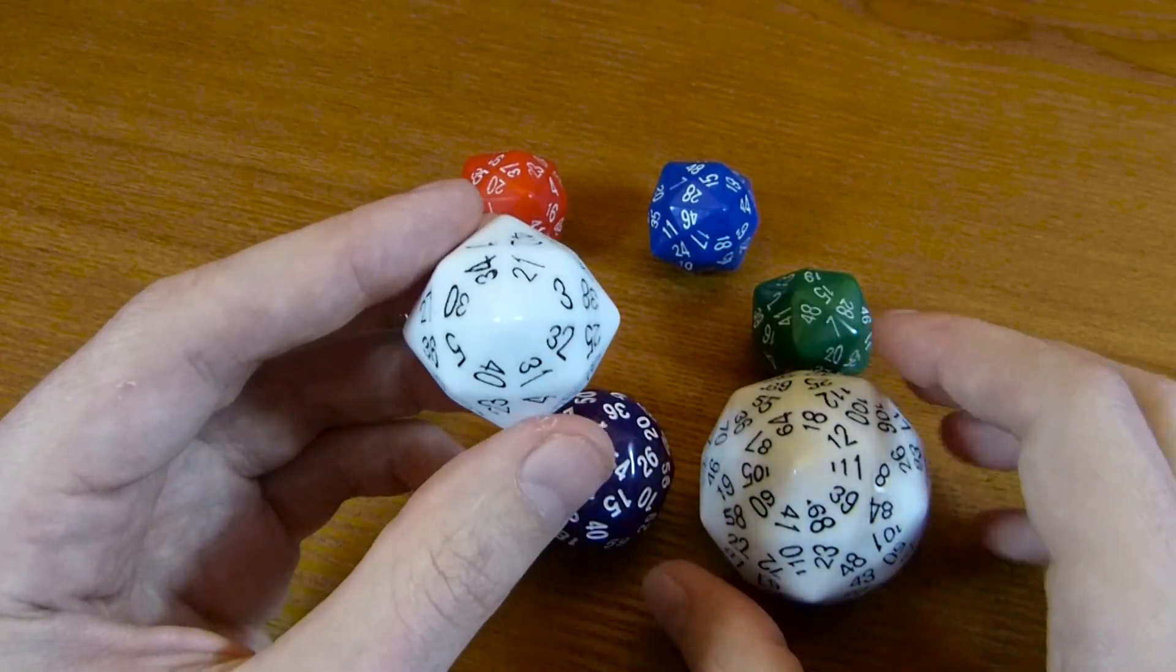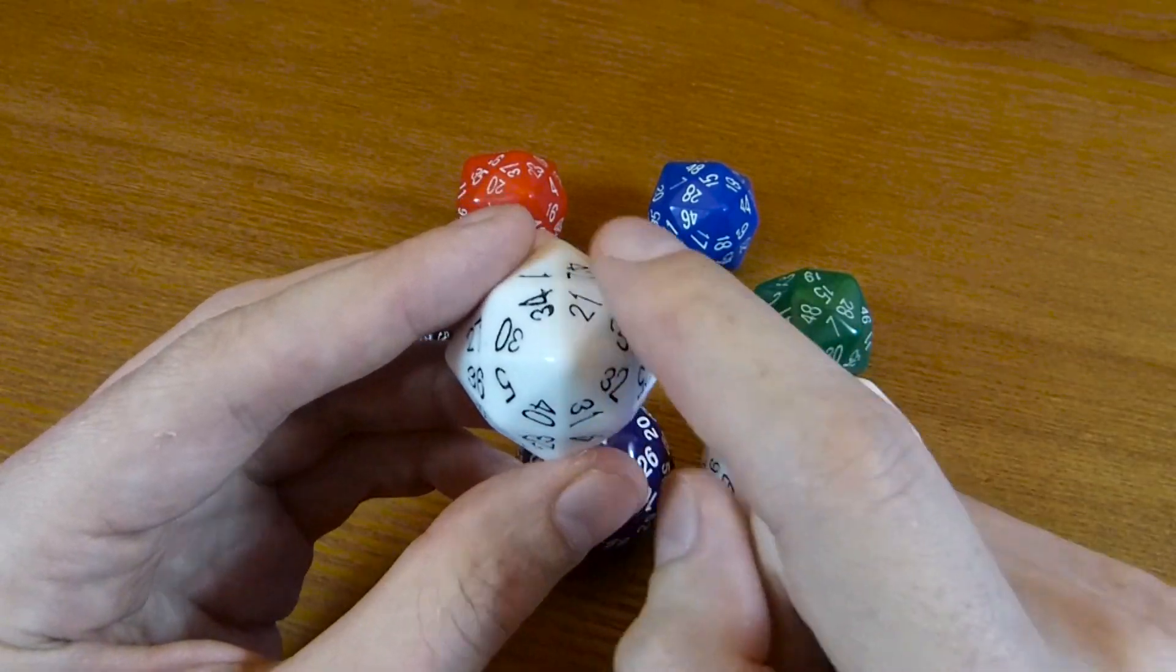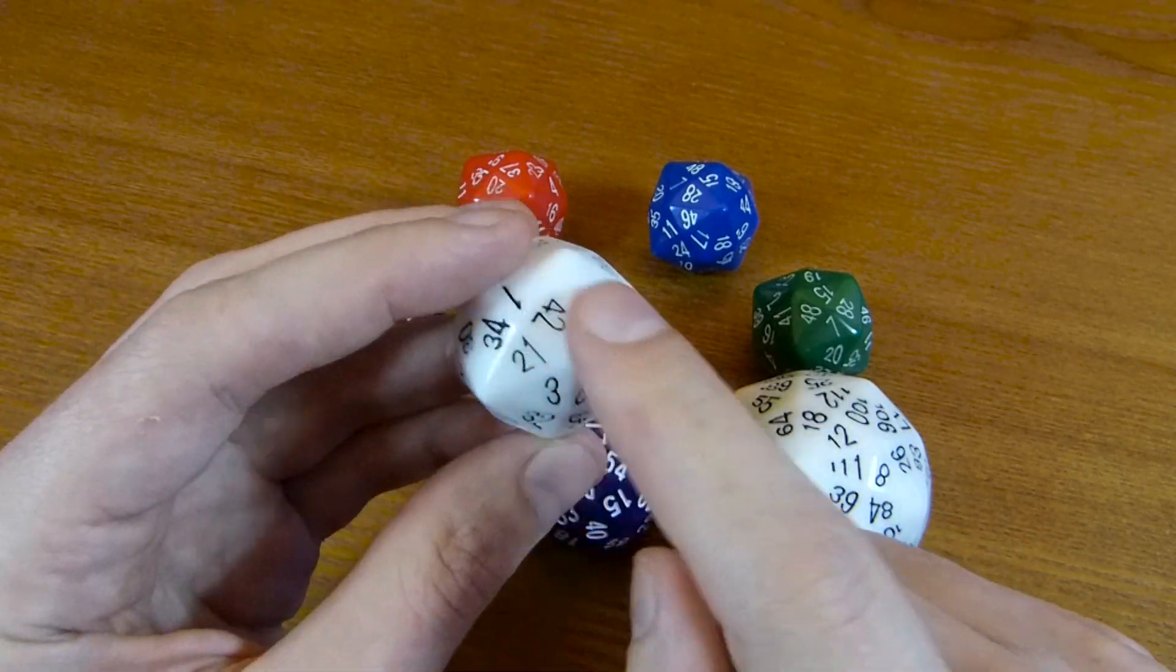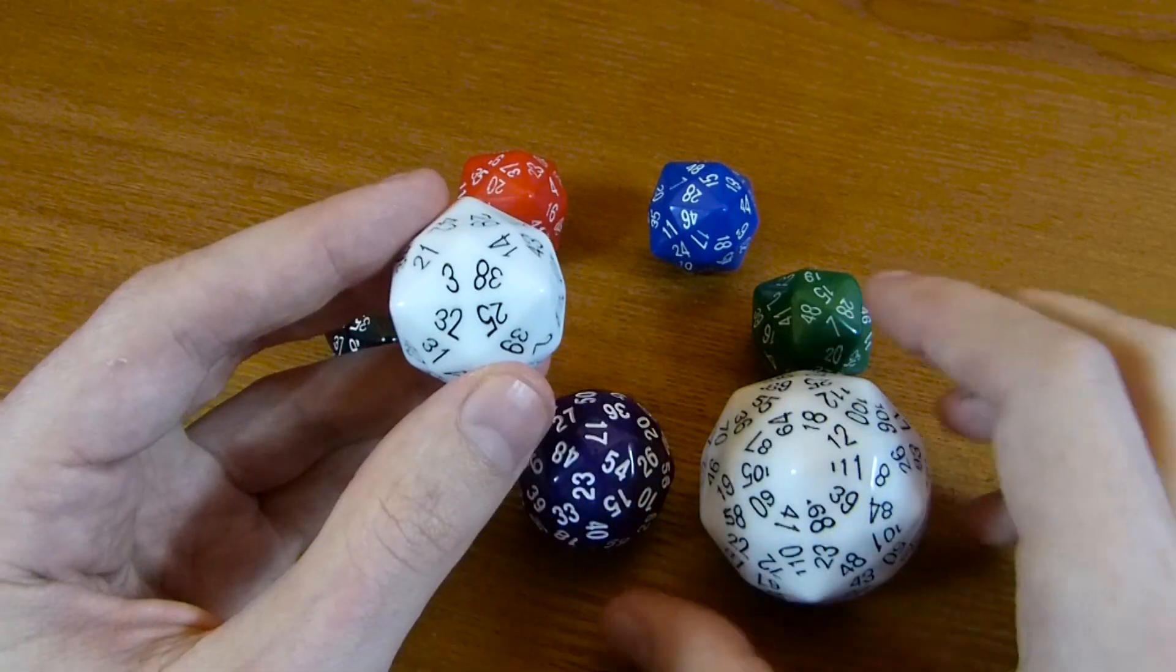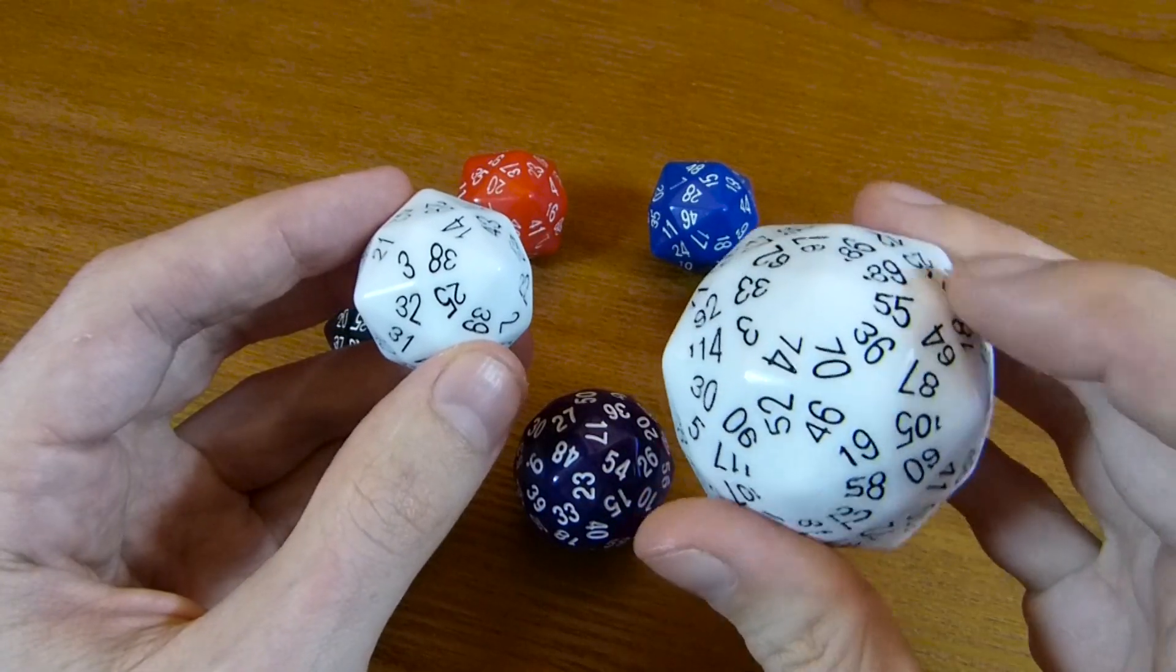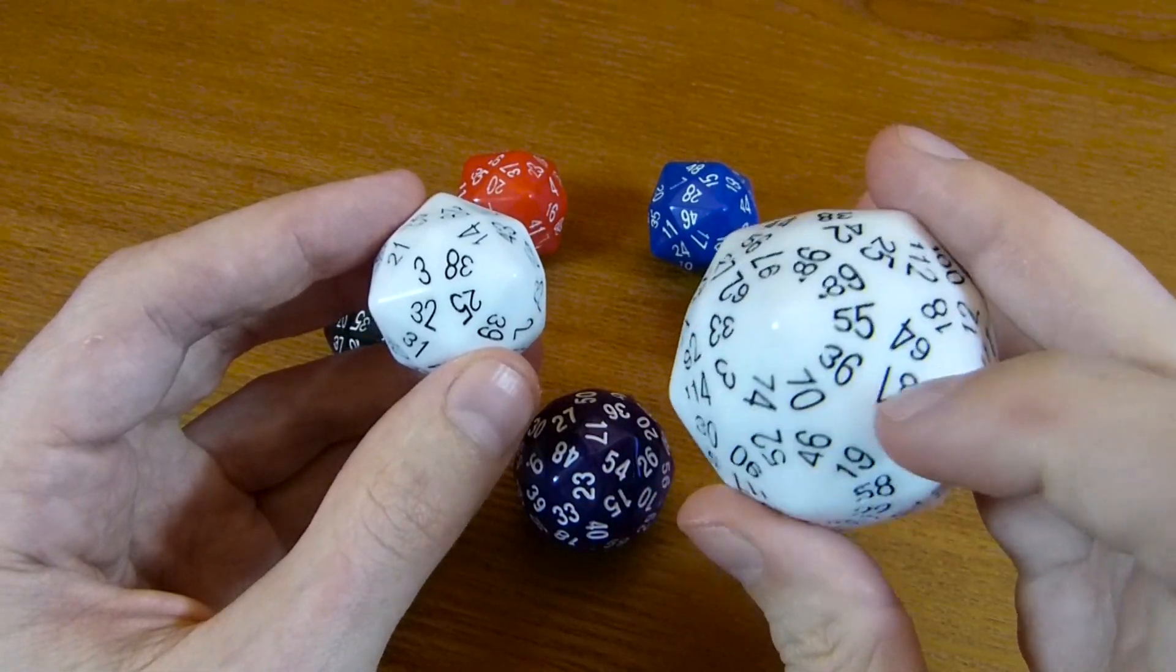And with the D48, you've got eight arranged around a vertex, and then there were some with six and some with four, and those are similar to the D120, which has sixes and fours.